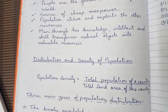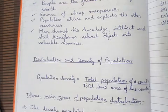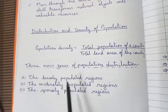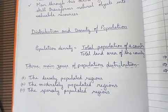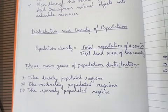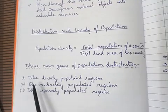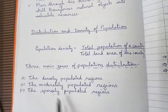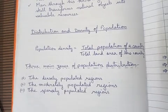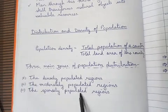Next, we are going to see about the distribution of population. There are three main zones of population distribution — meaning the population of the entire world can be kept into three groups. The first is densely populated regions. The second is moderately populated regions. And the third is sparsely populated regions.